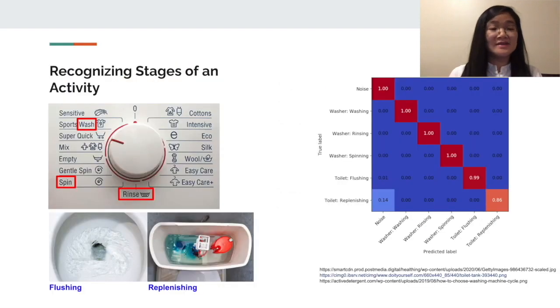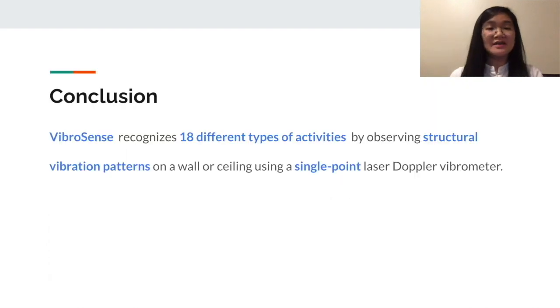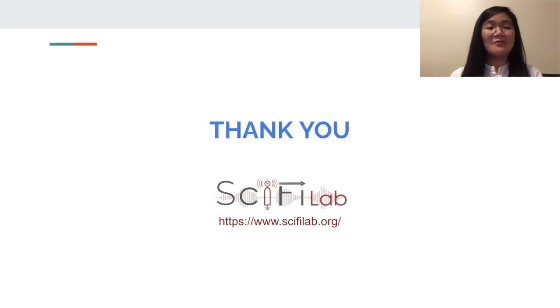To test if our approach can further diversify the activity into different stages, we divided the toilet activities into two stages: flushing and replenishing. The confusion matrix shown here visualizes that our system is able to recognize multiple stages of a single appliance with an average accuracy of 97.5%. VibroSense recognizes 18 different types of activities by observing structural vibration patterns on a wall or ceiling using a single-point laser Doppler vibrometer. That's the end of our work. Thank you.